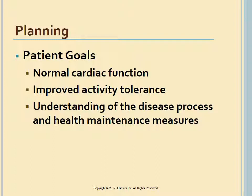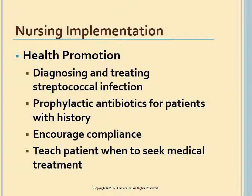Overall goals for a patient with valvular disease include normal cardiac function, improved activity tolerance, and understanding of the disease process and health maintenance measures. Diagnosing and treating streptococcal infections and providing prophylactic antibiotics for patients with a history of rheumatic fever are critical to prevent acquired rheumatic valve disease. Patients at risk for endocarditis must also receive prophylactic antibiotics, and those with a history of RF, endocarditis, or congenital heart disease should know the symptoms so early treatment may begin.